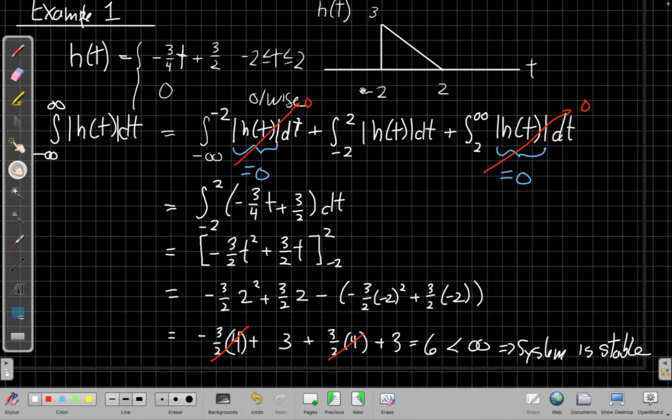And again, right from the start, if all I actually cared about was system stability, I could almost look at this and say this triangle has finite area, so the integral magnitude of H of T would be finite, and the system would be stable. So that's a good intuition to start building, is linking the areas shown in the picture, whether it's finite or not, to whether or not the system is stable. So we have time. Let's do one more example of a different case, and then we'll finish up.